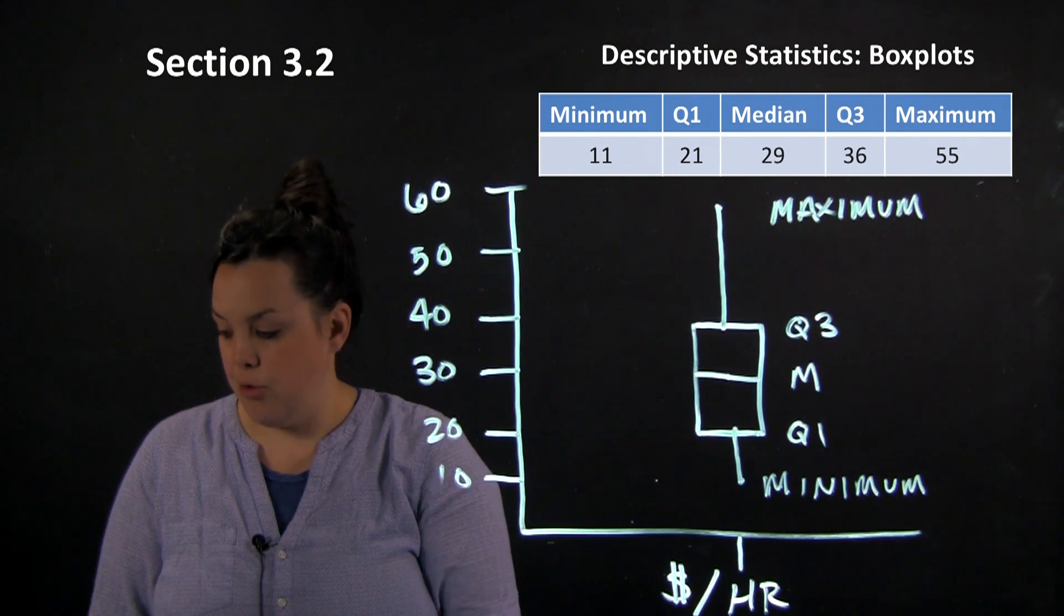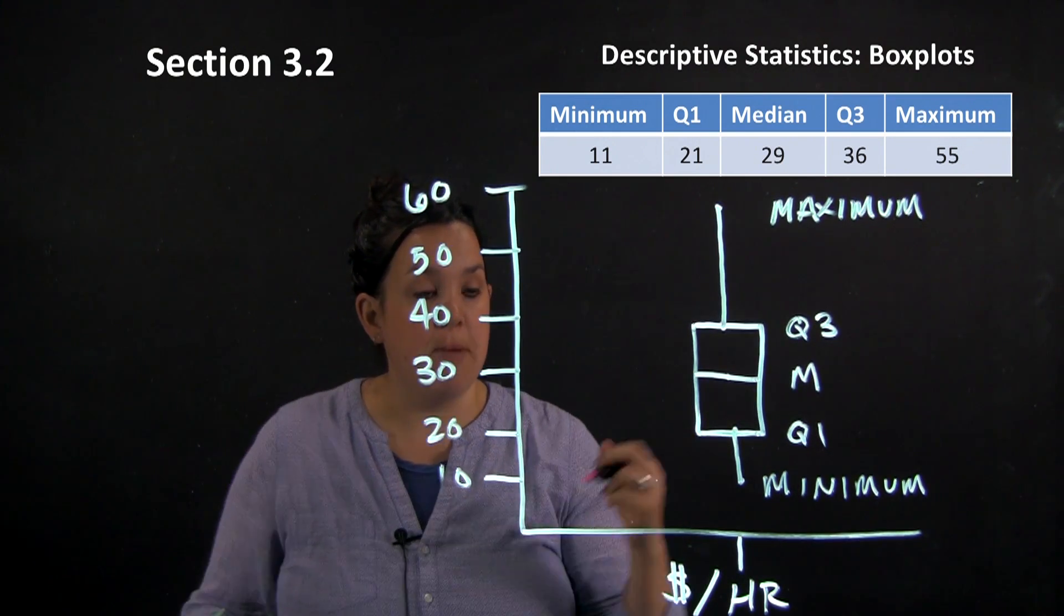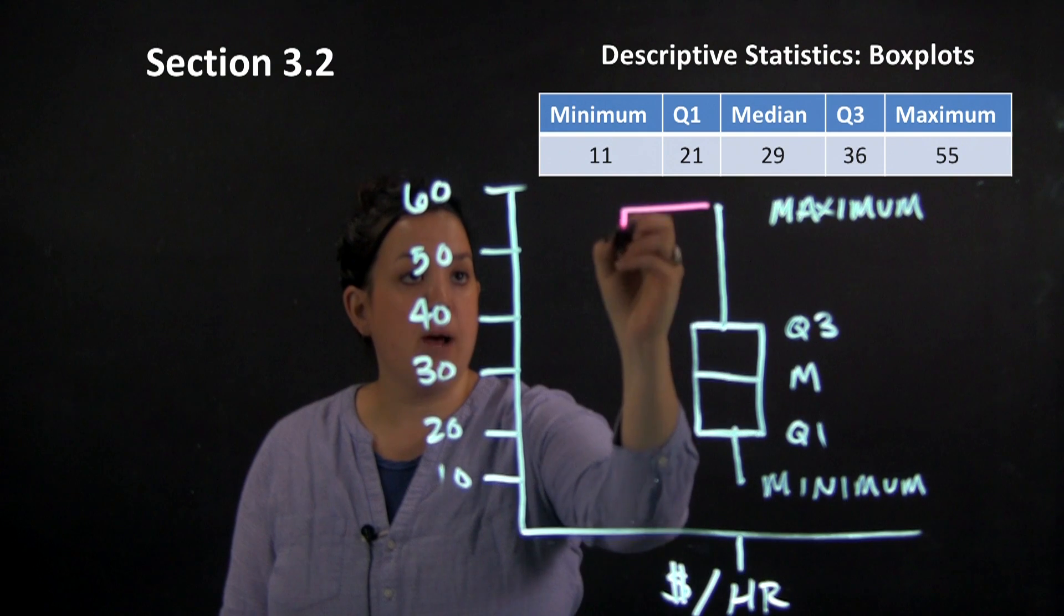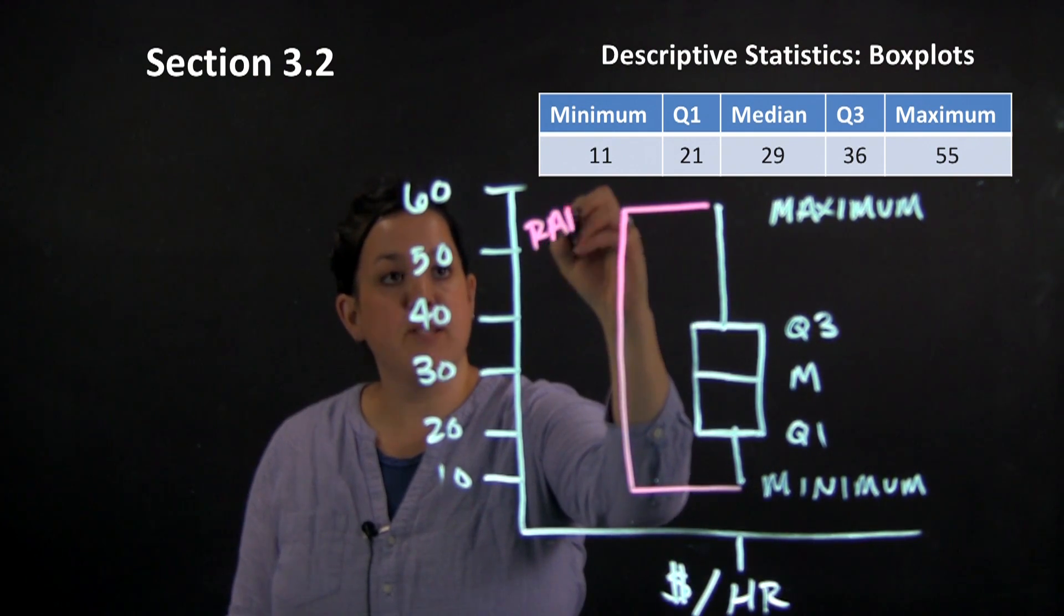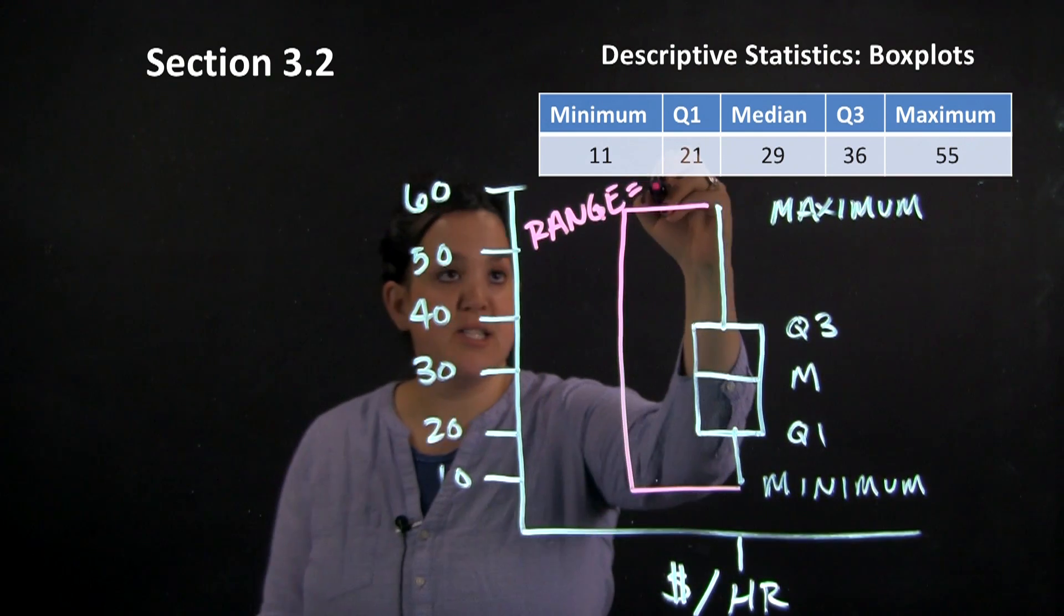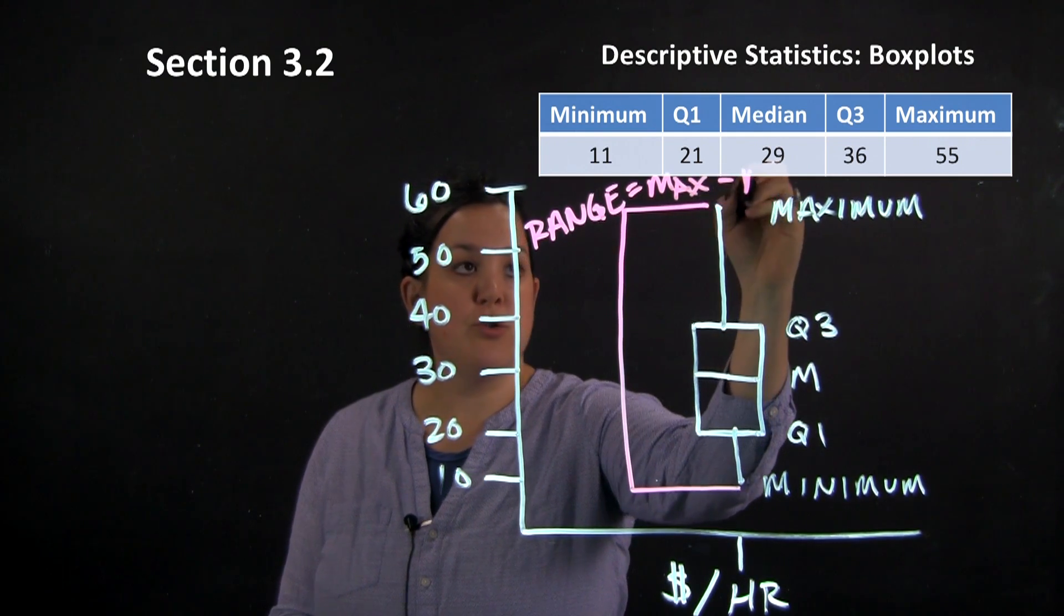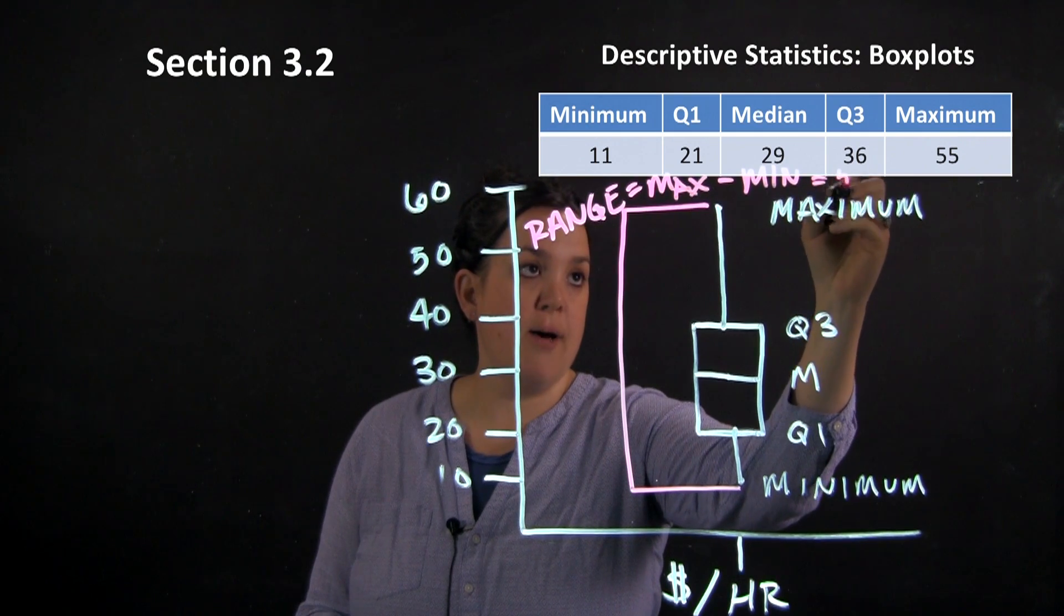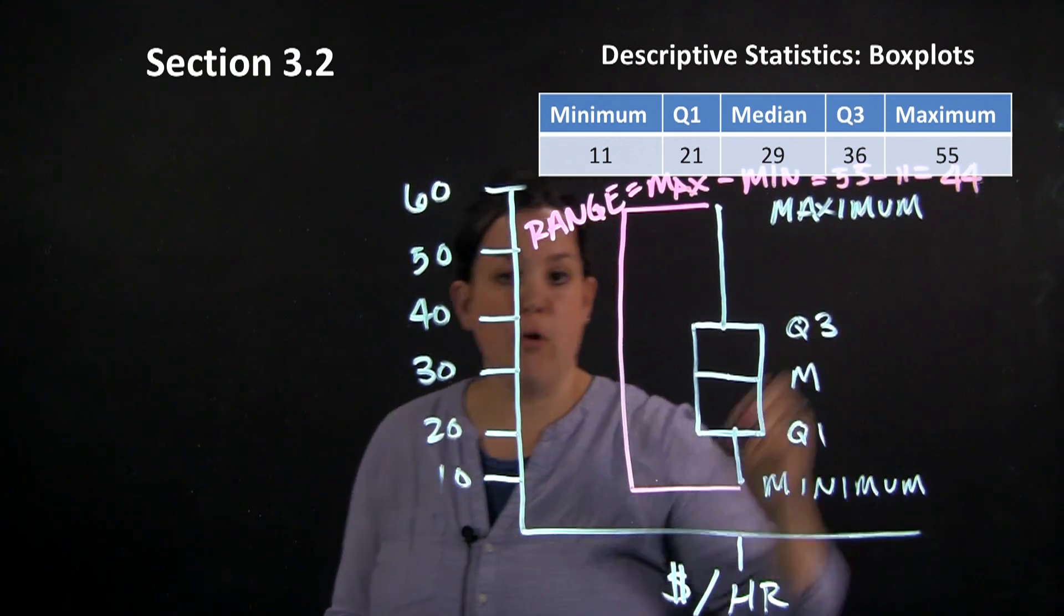One thing that I'm going to add is a measurement that we use to describe variability or spread. So one way that we describe variability or spread is through what's described as the range. So the range is going to be the distance from the maximum to the minimum. So for this data set we would have 55 minus 11 or a range of 44.